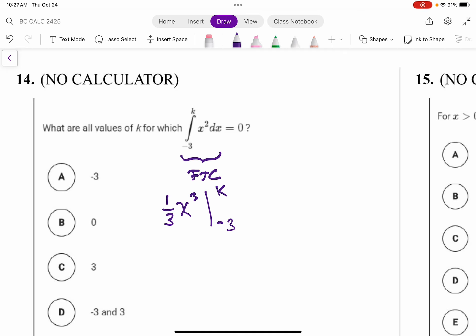And then whatever we get here as an expression, we're going to set it equal to 0 and solve. So this gives us positive 1 third, 1 third k cubed minus 1 third times negative 3 cubed.